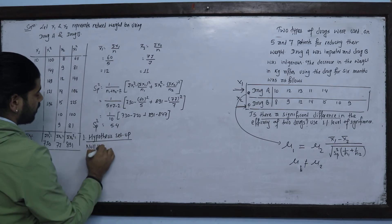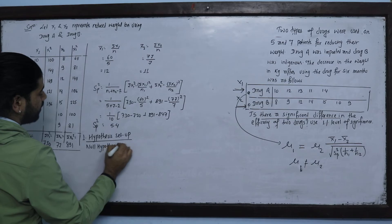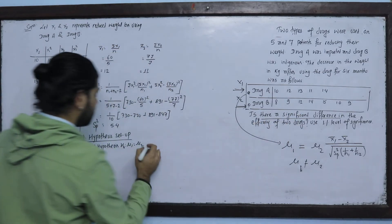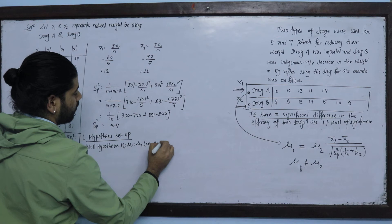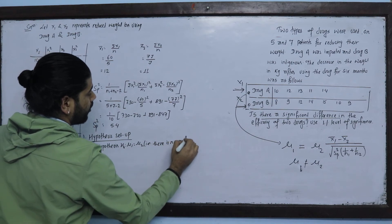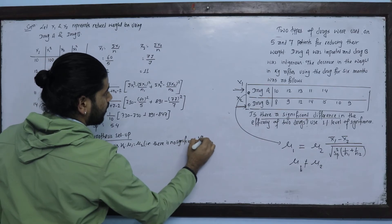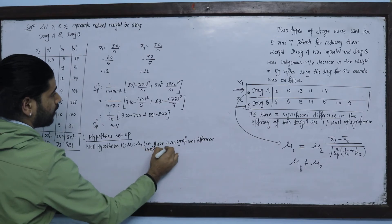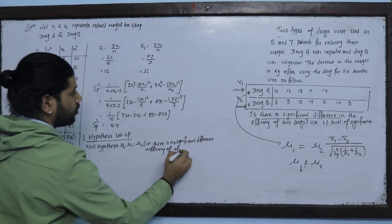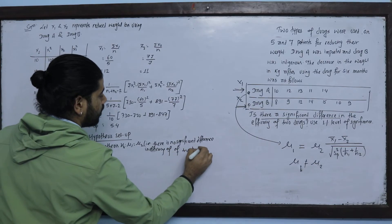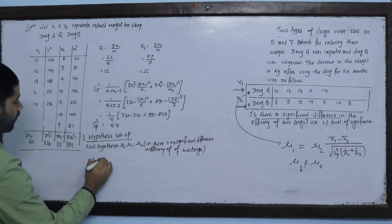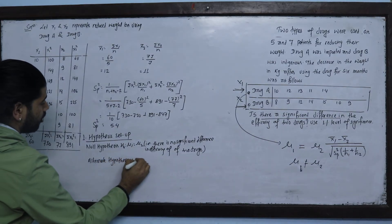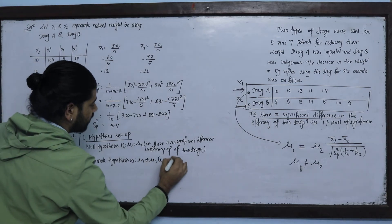Now setting up the hypothesis: the null hypothesis H0 states there is no significant difference in the efficiency of the two drugs. The alternative hypothesis H1 states that mu1 is not equal to mu2, meaning there is a significant difference in the efficiency of the two drugs.